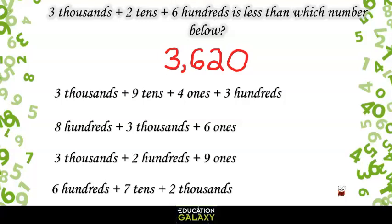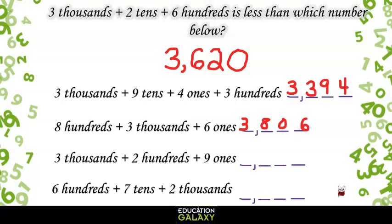Now let's figure out what each of the answer choices are. The first one has a 3 in the thousands, 9 in the tens, 4 in the ones, and 3 in the hundreds. That's 3,394. The second one has an 8 in the hundreds, 3 in the thousands, and 6 in the ones. There are no tens, so we put a 0 there to hold its place. That's 3,806.